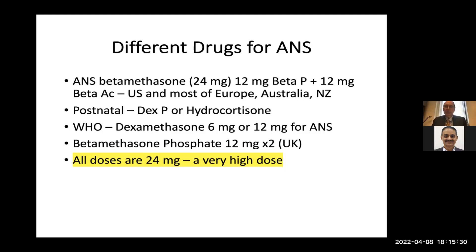The WHO trial used dexamethasone — four doses of 6 mg or two doses of 12 mg. Betamethasone phosphate can be given as two 12 mg doses, used in the UK. Interestingly, all of these antenatal doses are 24 mg, and the recommendation for a patient dying of COVID in an ICU is a 20 mg dose — so actually the dose we give women for risk of preterm labor is higher than the dose for patients dying of COVID, which probably doesn't make any sense.